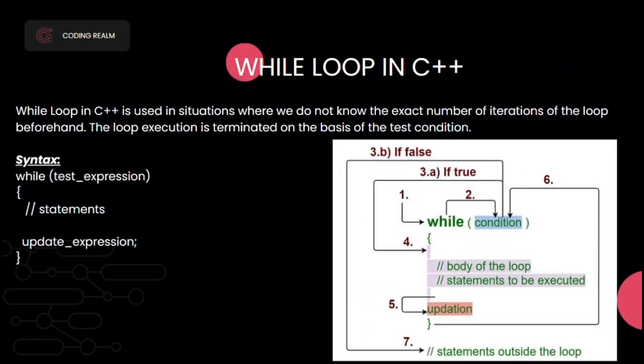Now the while loop in C++. The while loop is used in situations where we do not know the exact number of iterations beforehand. The loop execution is terminated based on the test condition. The syntax of the while loop includes: the while keyword, the test expression, the statement body, and the update expression.